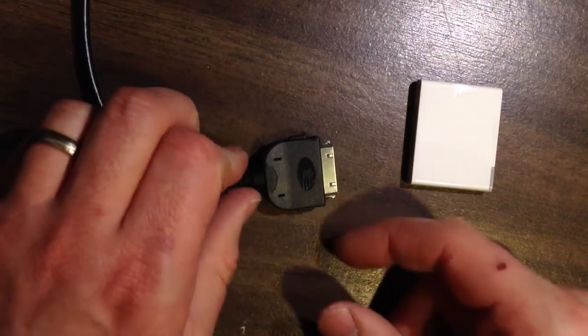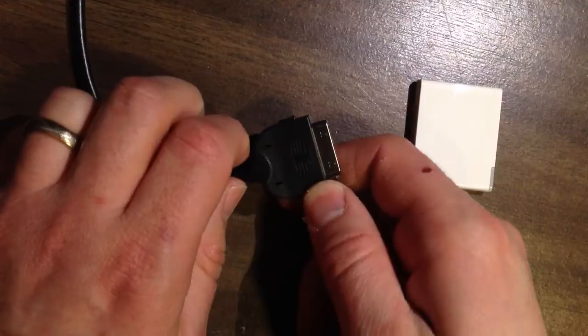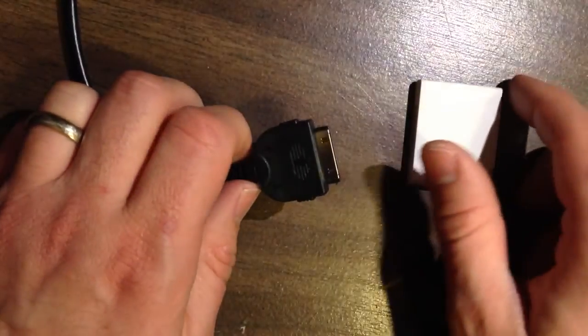So what you see here in front of you is the 30-pin side of one of the custom AMI aux cables that I make.